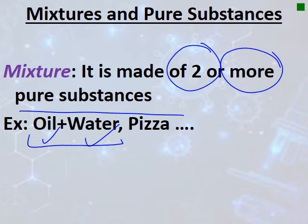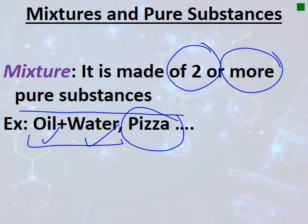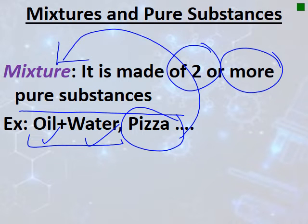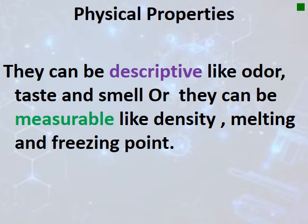Pizza, for example, may contain ketchup, vegetables, sauce, and others — all of them together form what is known as a mixture. Now let's talk about physical properties. Physical properties are divided into two groups.